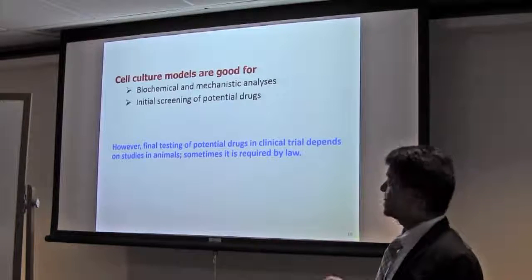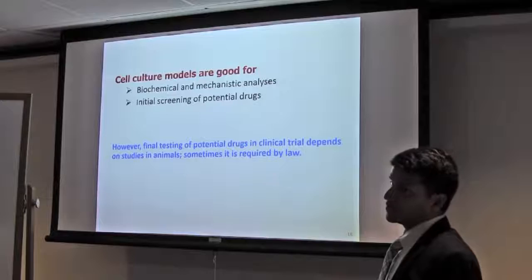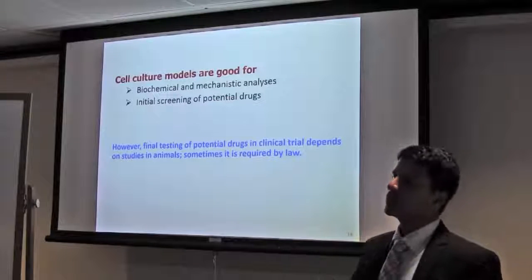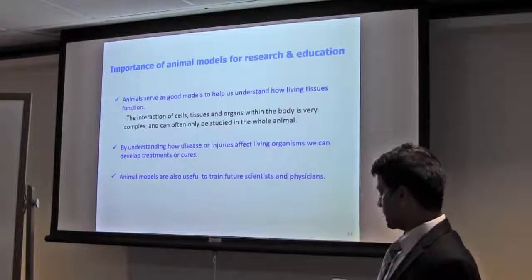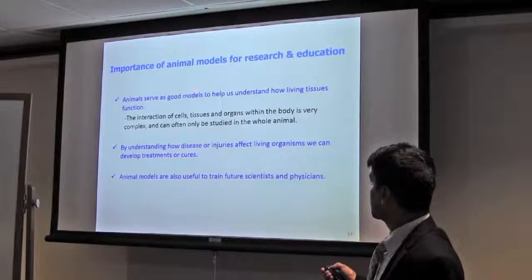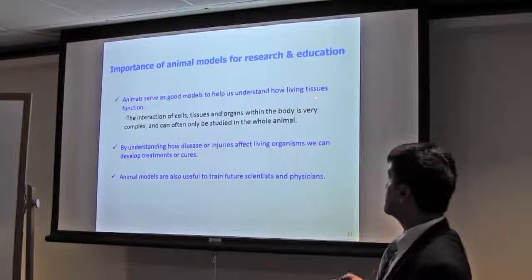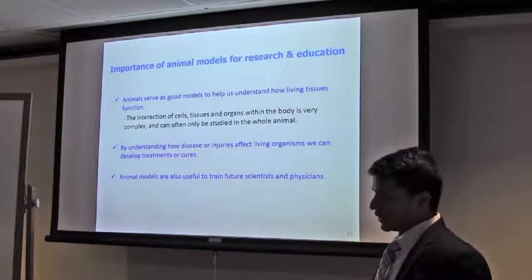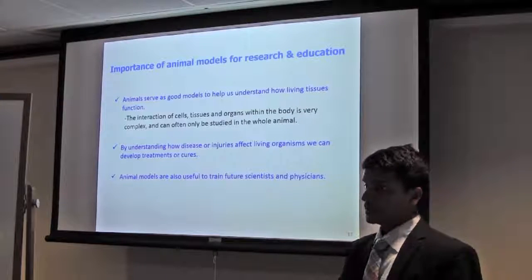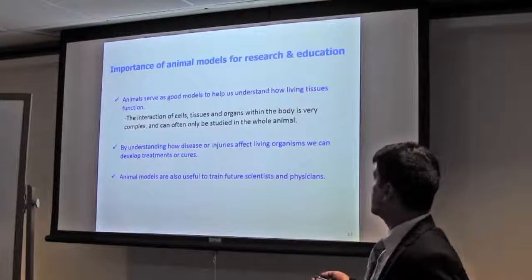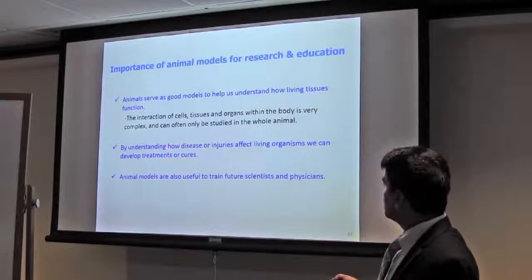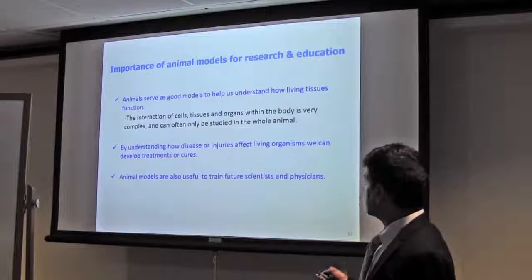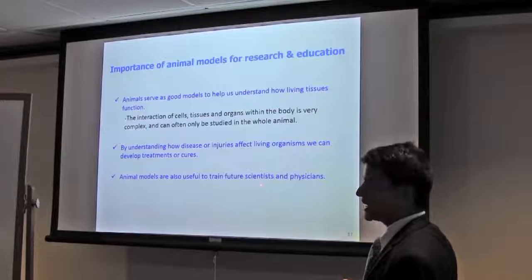The final testing of potential drugs in clinical trials depends mainly on animal studies results. Sometimes it is required by law - you have to do animal studies, then you can go for clinical trials. We have to study animal models because they help us understand how living tissues function, because cells, tissues, and organs within the body are very complex. If you study only single, segregated cell or organ, it's not appropriate like the whole body. By understanding how disease or injuries affect living organisms, we can develop treatments or cures. It's also helpful for training future scientists and physicians.